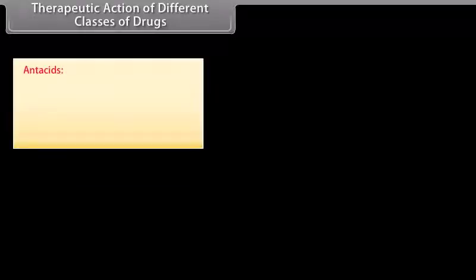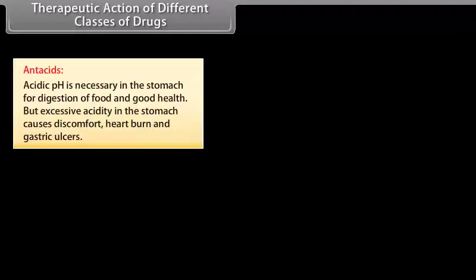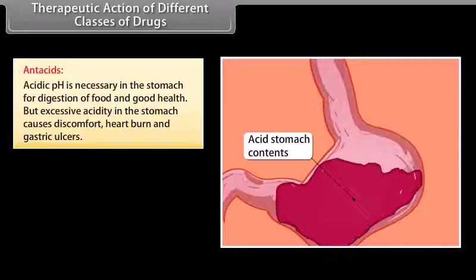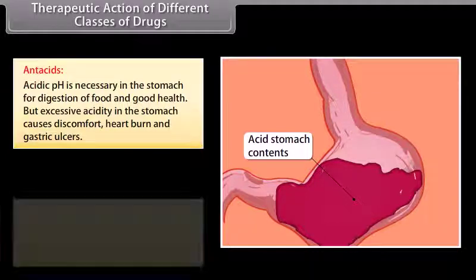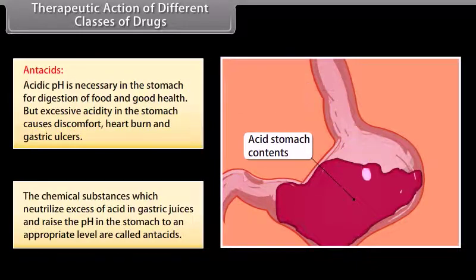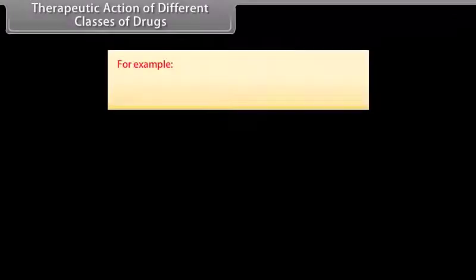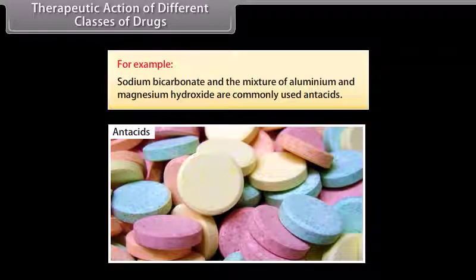Therapeutic action of different classes of drugs — Antacids: acidic pH is necessary in the stomach for digestion of food and good health, but excessive acidity causes discomfort, heartburn, and gastric ulcers. The chemical substances which neutralize excess acid in gastric juices and raise the pH in the stomach to an appropriate level are called antacids. For example, sodium bicarbonate and the mixture of aluminium and magnesium hydroxide are commonly used antacids.